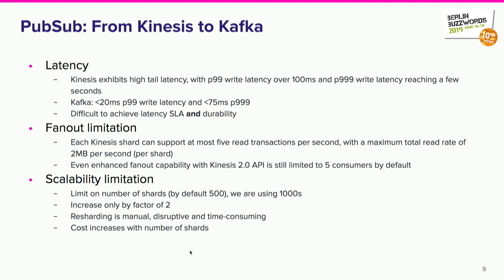The second problem is the fan-out limitation. With how Kinesis is set up, there is a restriction on how much data can be taken out of a stream or a shard, so it's not possible to do a fan-out on a high-throughput stream — there can only be one consumer essentially. Even with the new Kinesis 2.0 API it's still limited to five consumers. In a Kafka world you very often have many consumers for the same stream processing data in different ways, which is something we need too.